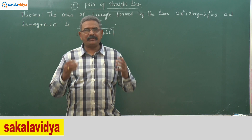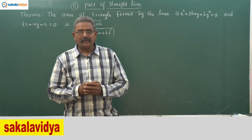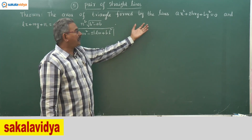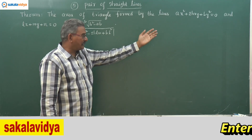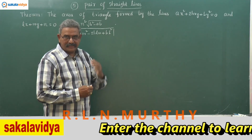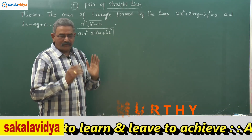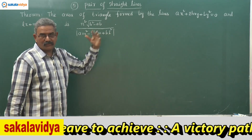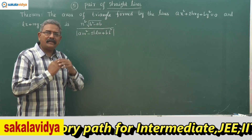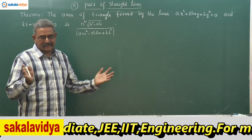One more very important theorem is to find the area of a triangle. The area of the triangle formed by the lines ax² + 2hxy + by² = 0 and lx + my + n = 0 is given by n² √(h² - ab) divided by |am² - 2hlm + bl²|. This is very useful for competitive entrance examinations as well as board examinations of Class 11 and 12.